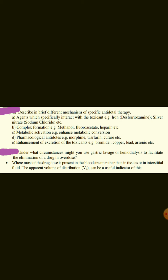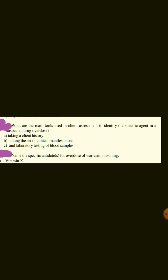Under what circumstances might you use gastric lavage or hemodialysis to facilitate the elimination of a drug in overdose? Where most of the drug dose is present in the bloodstream rather than in tissues or in intestinal fluid — the apparent volume of distribution can be a useful indicator for this.